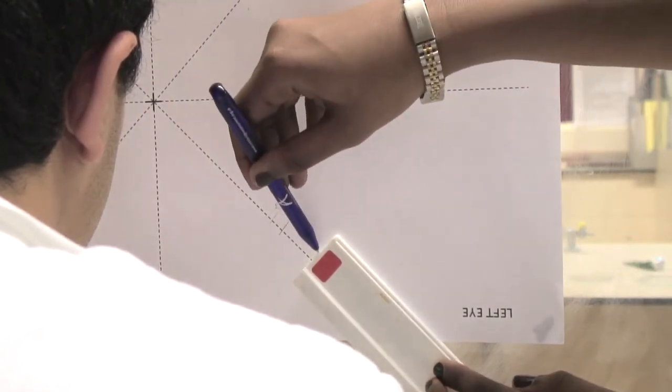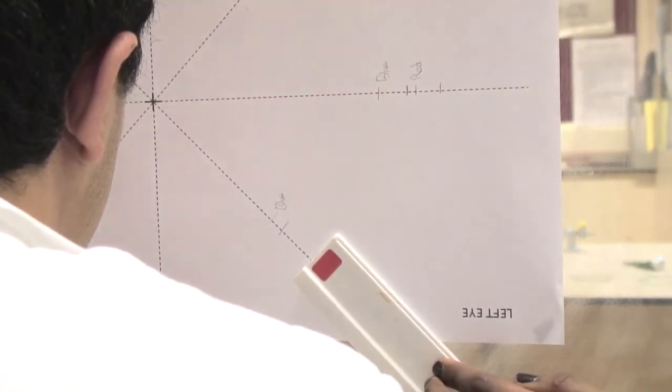You will repeat this until your field of view results are recorded for all eight lines.